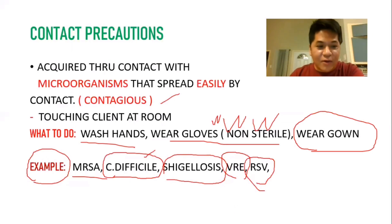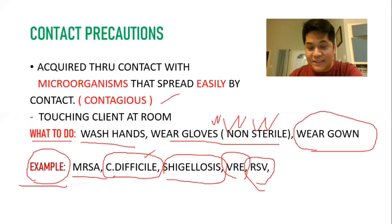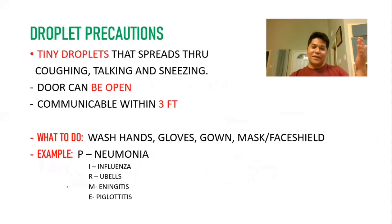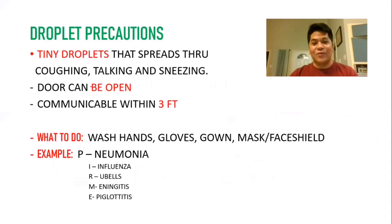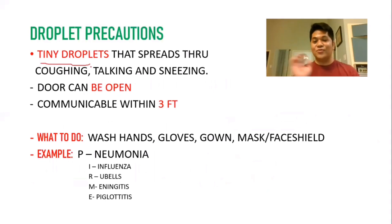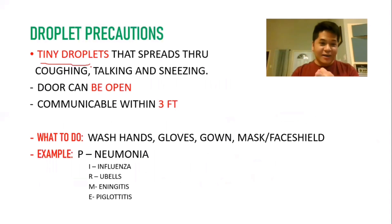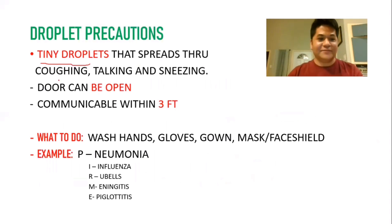Remember what to do and also the example diseases — they ask questions about that. Next, droplet precautions. From the word droplet, these are tiny droplets that spread through coughing, sneezing, talking, and singing — anything that comes from your throat.